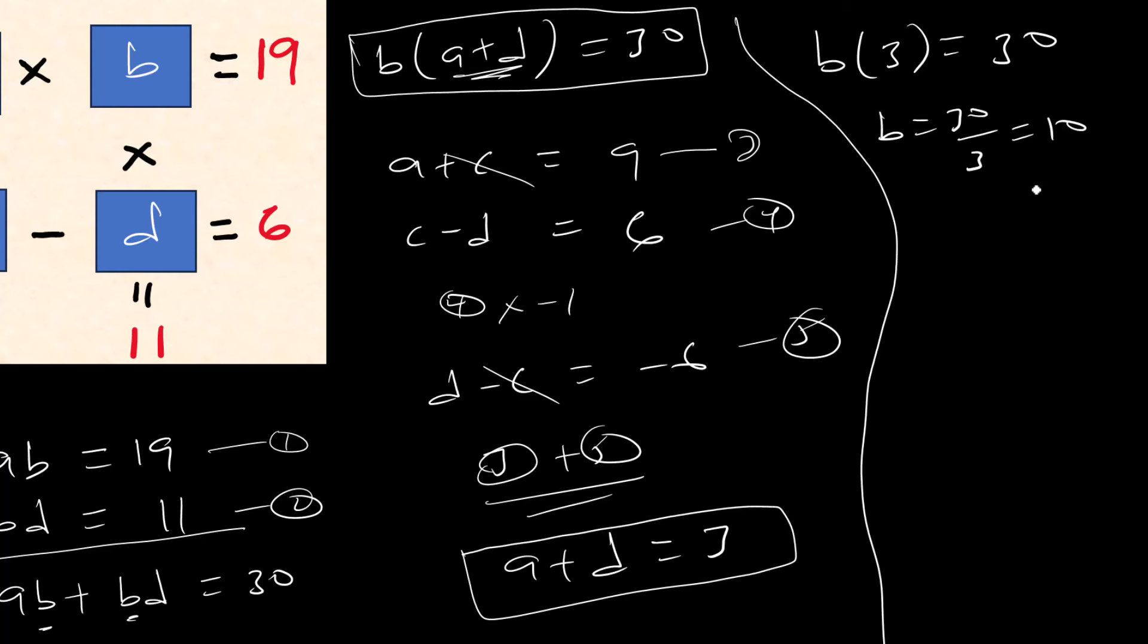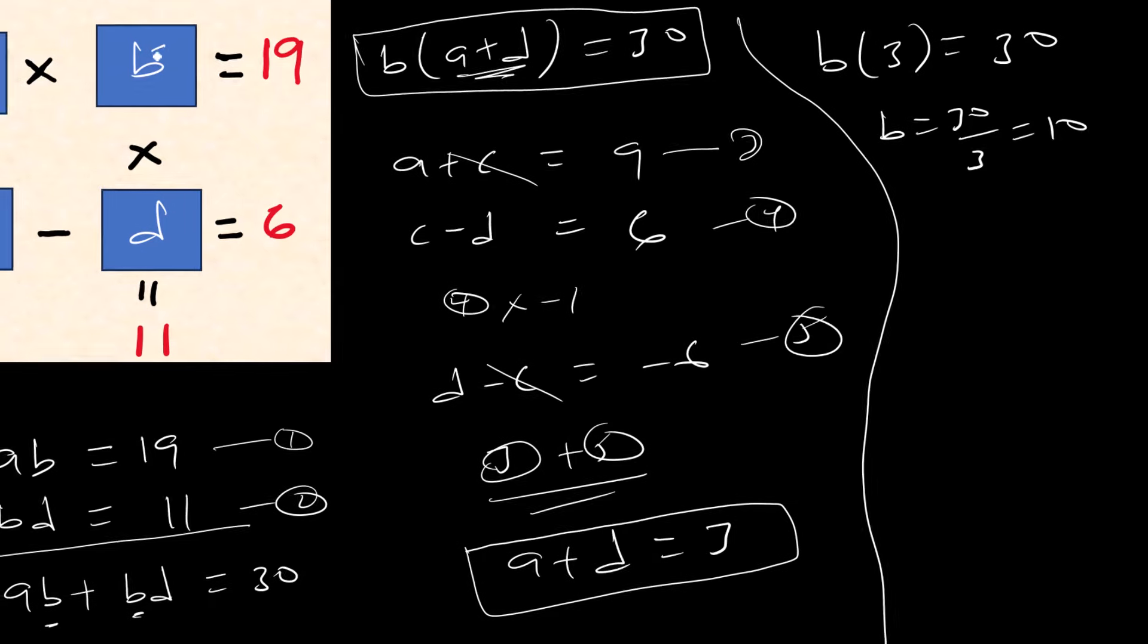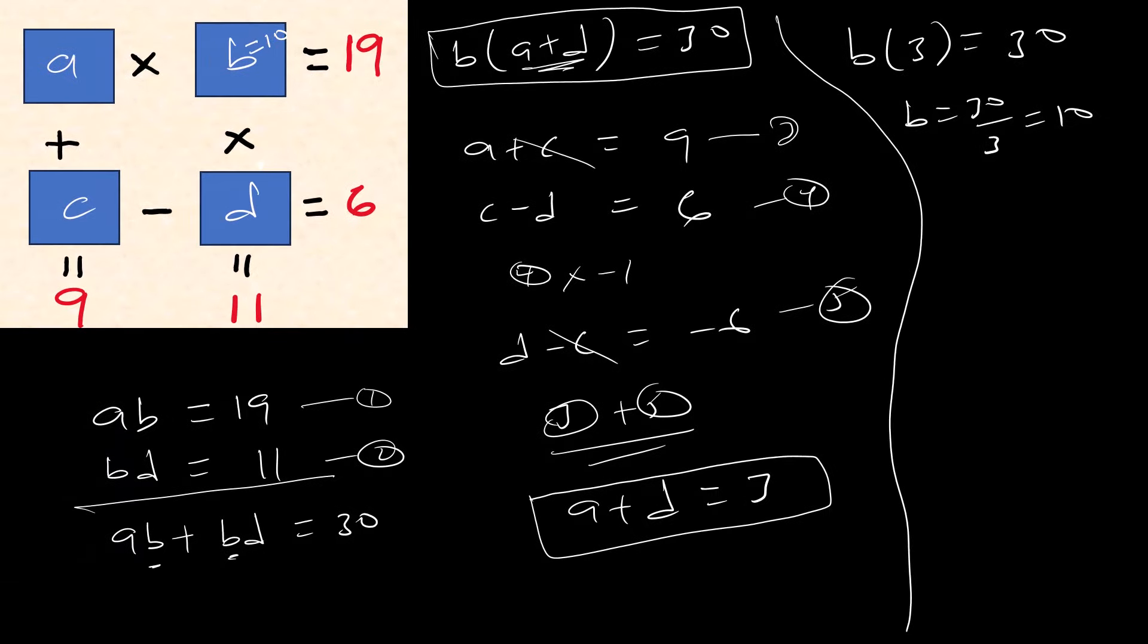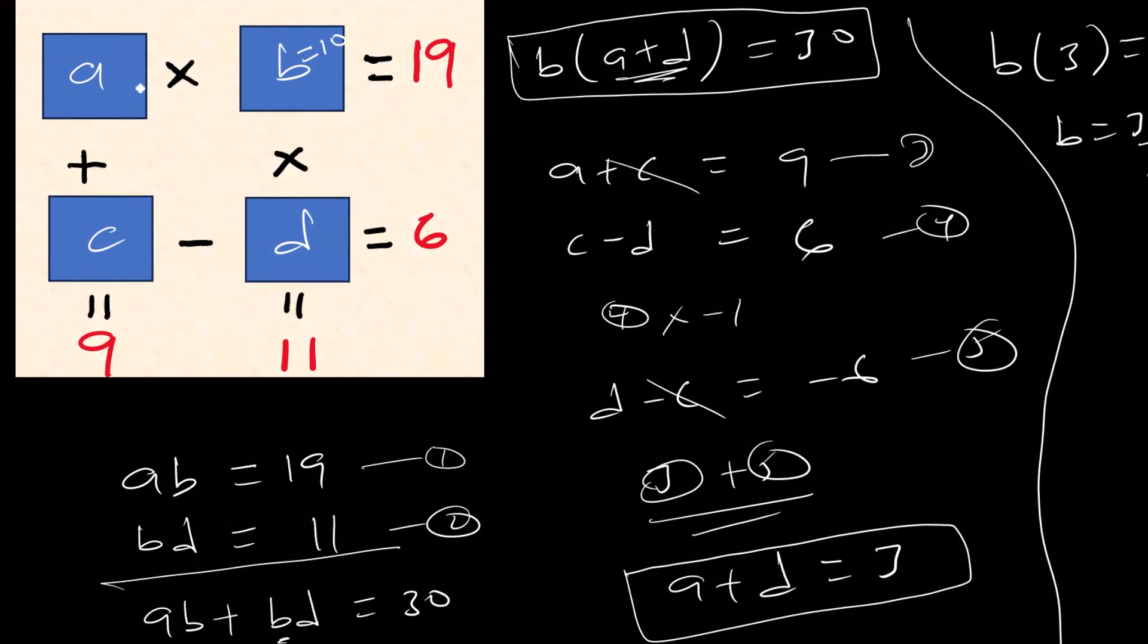Okay, so b is 10. Okay, so once we know b, we can find a. So what value times 10 will give you 19? Okay, so it's 1.9.